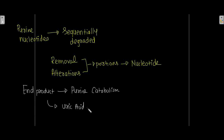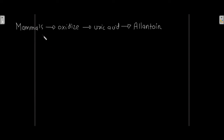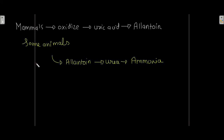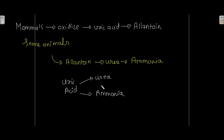In mammals other than primates, uric acid is oxidized into allantoin. In some animals other than mammals, this allantoin or uric acid can be further degraded to urea or even ammonia.